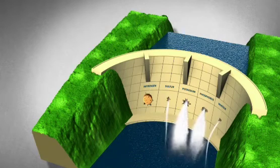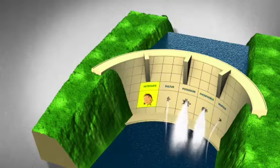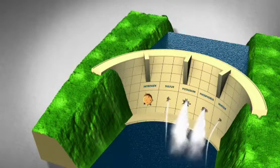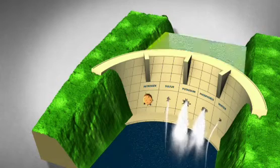More than likely, there are other yield limiting factors, such as potassium and phosphorus. Even if you plug the nitrogen hole, if either of those two nutrients are not supplied to 100% sufficiency, you're still missing out on yields and money.